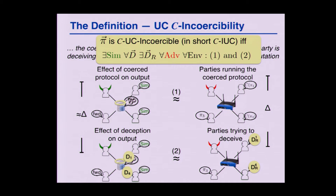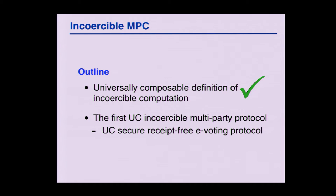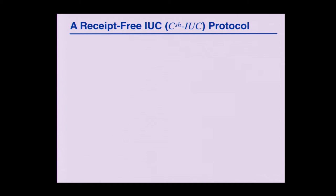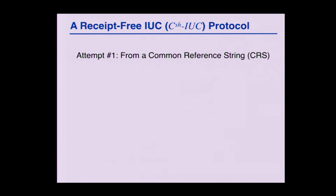Hopefully I didn't lose too many of you, but those who got lost can now jump back on board, because I'm going to discuss the construction — and you won't need the full definition to understand why this construction works. To go back to a lighter version, let me start with a first attempt, sticking to semi-honest coercion — just receipt-freeness — and try to build an incoercible protocol from the standard UC setup: a common reference string. As I'll show, we cannot do that.